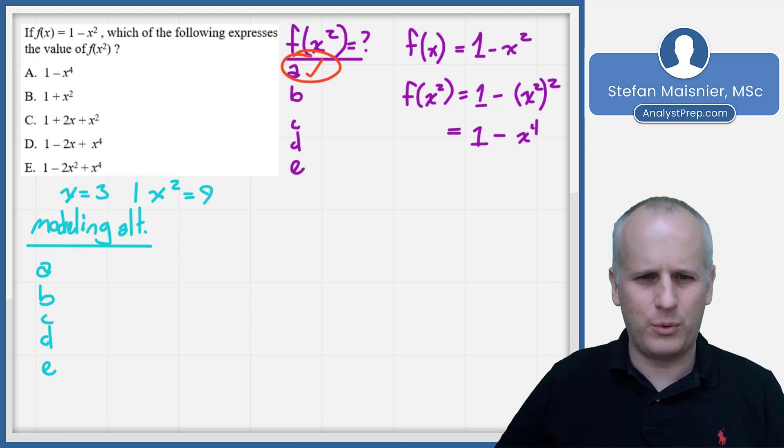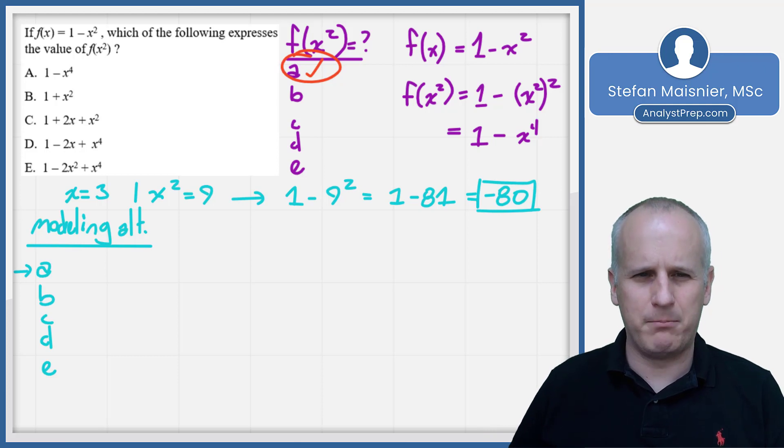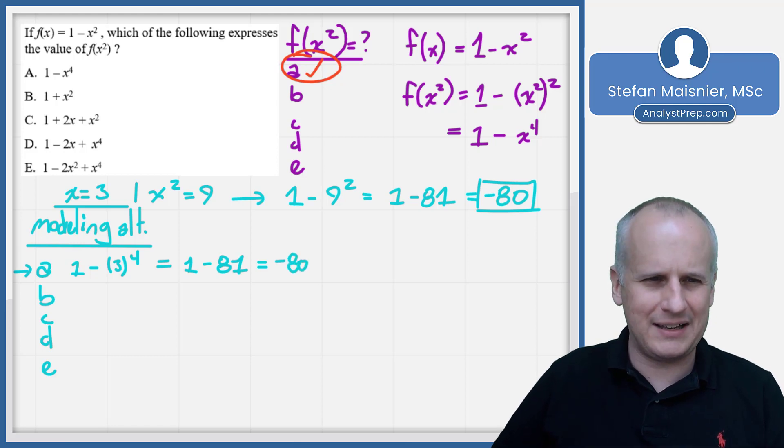We want to show which of the following expresses the value of 1 minus x squared when 9 is x squared, but x was our original value of 3. We have to work through our actual expression, which would be 1 minus 9 squared, which would be equal to 1 minus 81, which would give me a value of negative 80. That's the target that our correct answer must match. When we're plugging in our value for x, our value for x is going to be 3. Our first expression is 1 minus 3 to the 4th, and 3 to the 4th is going to be equal to 3 squared squared, or 1 minus 81, which is going to be equal to my negative 80. That is our correct answer.